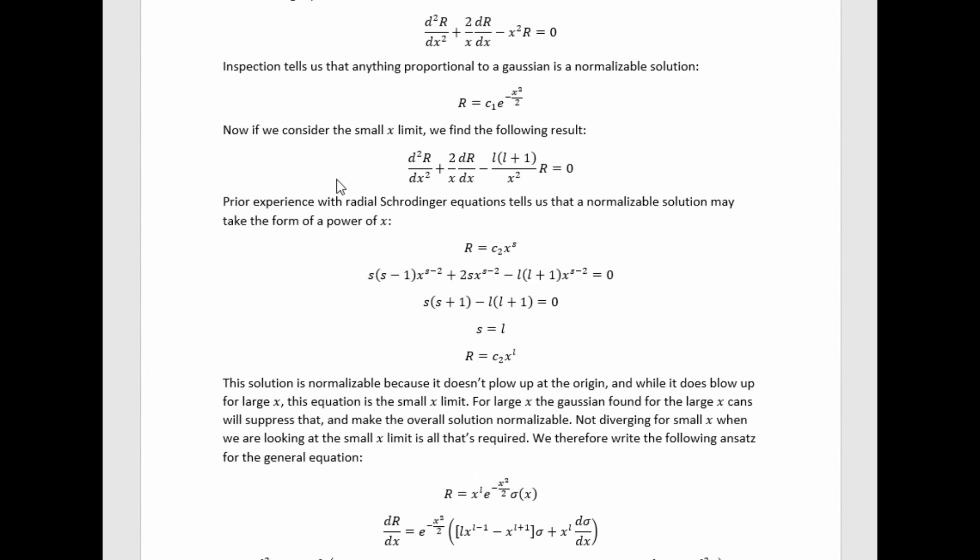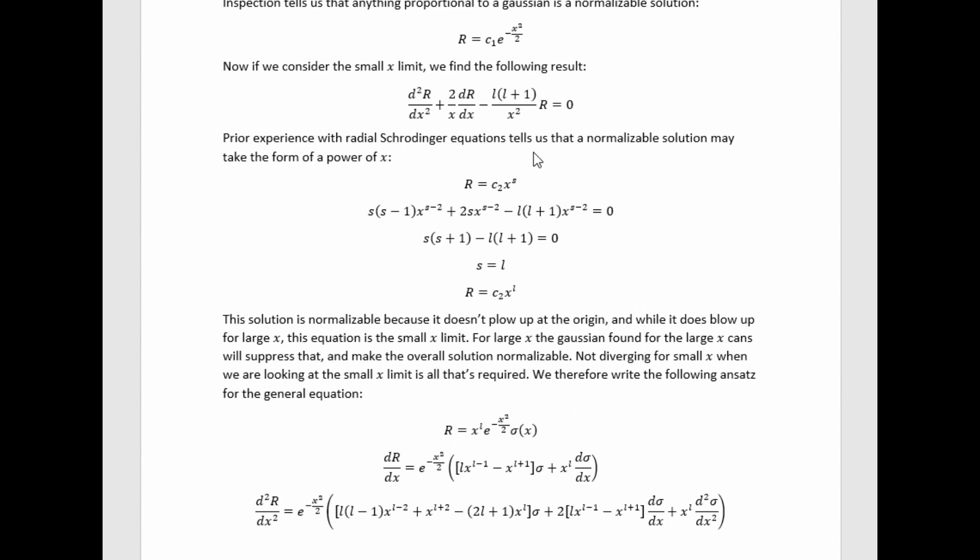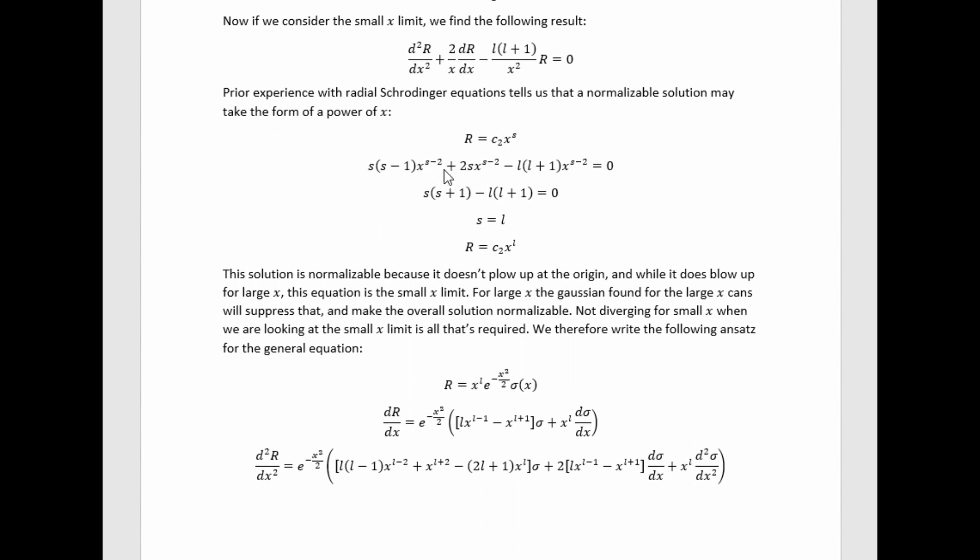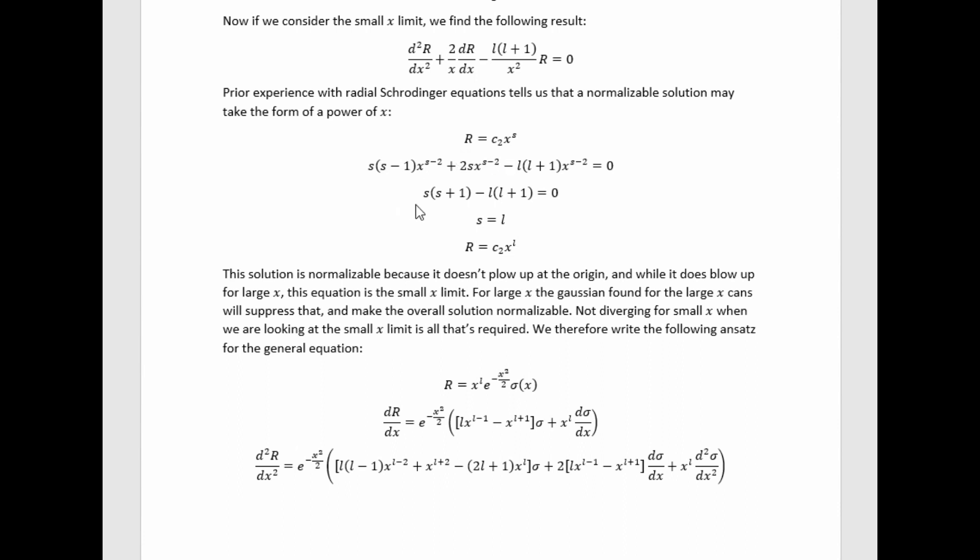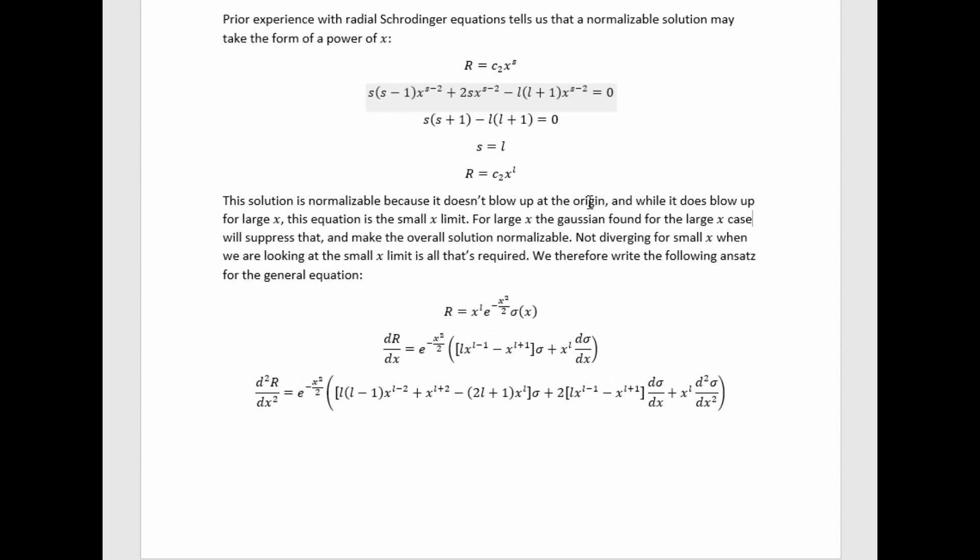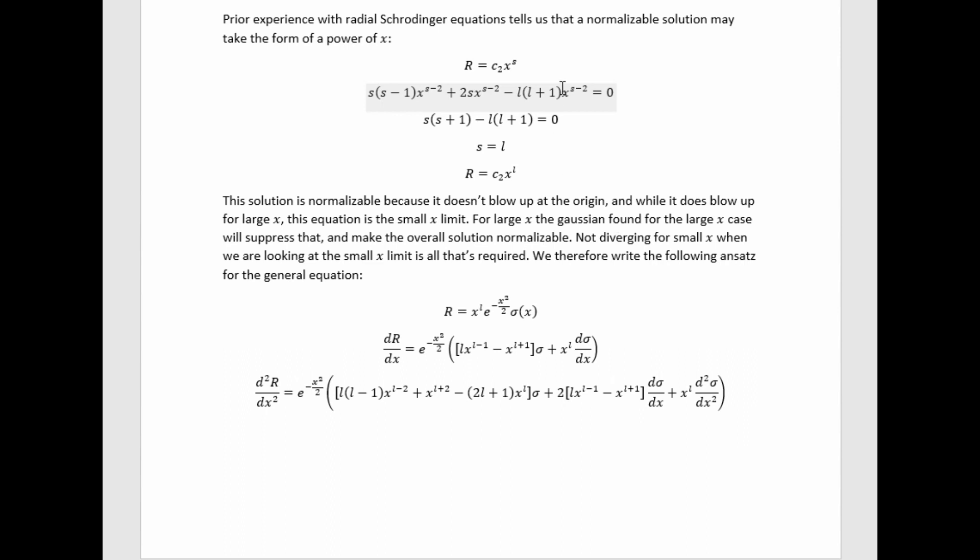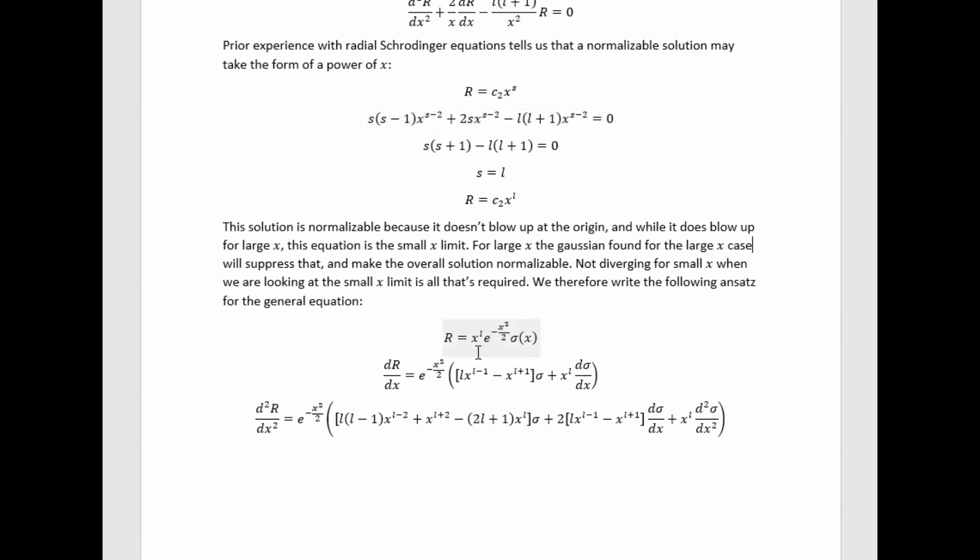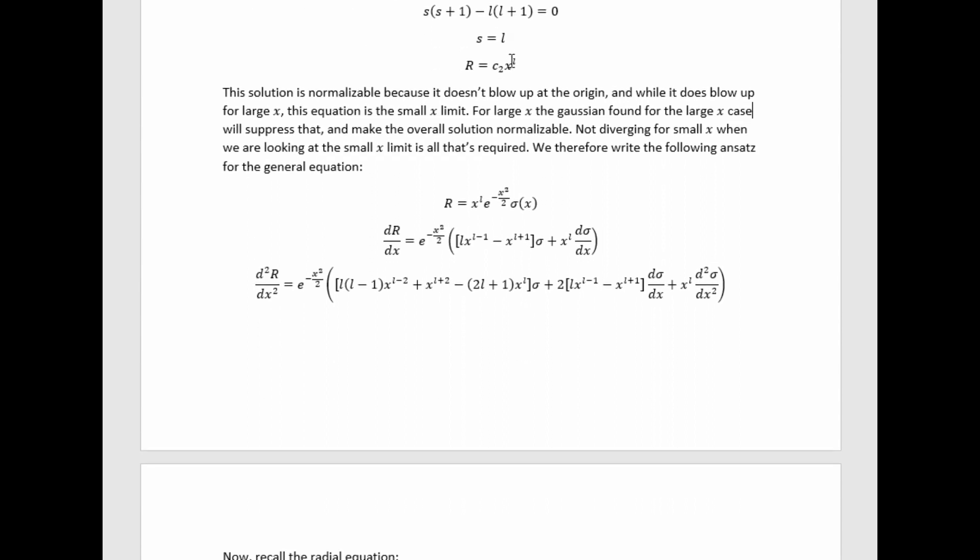Now, if we consider the small x limit, we arrive at this equation. Prior experience with radial Schrodinger equations, and other differential equations of this type, tells us that a normalizable solution may take the form of a power of x. So we postulate a solution like this, and then we plug it in to see what we have to set s equal to in order to make this solve it, and we find we just need to set s equal to l. This solution is normalizable because it doesn't blow up at the origin, and while it does blow up for large x, this doesn't matter because this equation is only valid for small x. For large x, we saw that the behavior of the radial part of the wave function is like a Gaussian we saw up here. So we know that when we're writing our ansatz that includes a factor for the small and large x asymptotic behavior, this Gaussian will suppress that blow up. So really all we need to do is make sure it doesn't blow up for small x, because that's the only region in which we expect this equation to be valid for anyway.